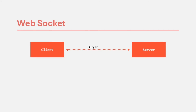The server can send ping frames to keep the connection alive and detect inactivity. On a high level, when we use web sockets, a TCP/IP connection gets established between the client and the server, which remains open until the client or the server closes it. This is what allows real-time data transfer between the client and the server.